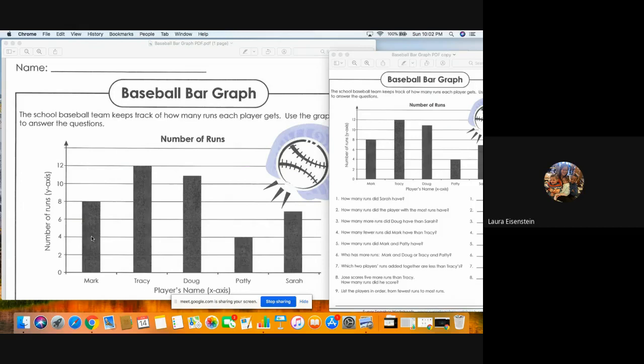So if I did Mark and Doug, Mark has eight, Doug has 11, that would be 19. That would be more than Tracy, not less. Doug has 11, so anybody added with Doug is going to end up being more than Tracy. Probably same thing with Mark because his is pretty high for eight.